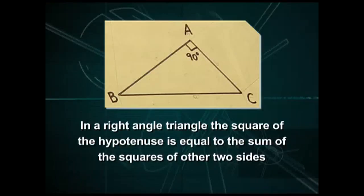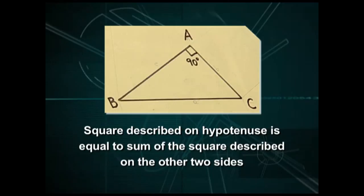It states that in a right triangle, the square of the hypotenuse is equal to the sum of the squares of other two sides. That is, square of the hypotenuse is equal to sum of the squares on the other two sides.